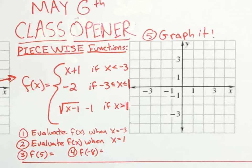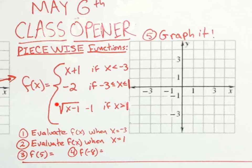We have this f of x piecewise function. There are three pieces to it. We have a linear function, another line, and a square root function that has an h and k shift. We might have to get familiar with square root functions, but let's go through this class opener.